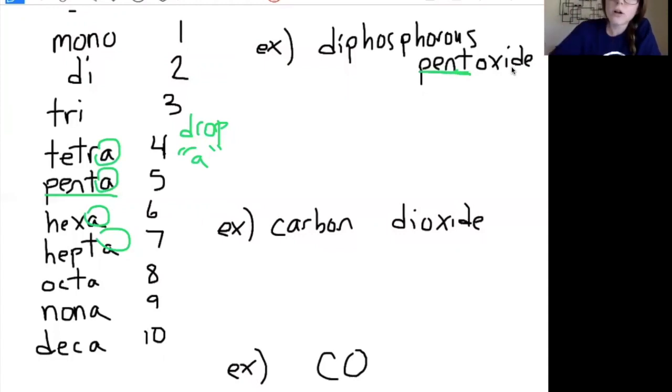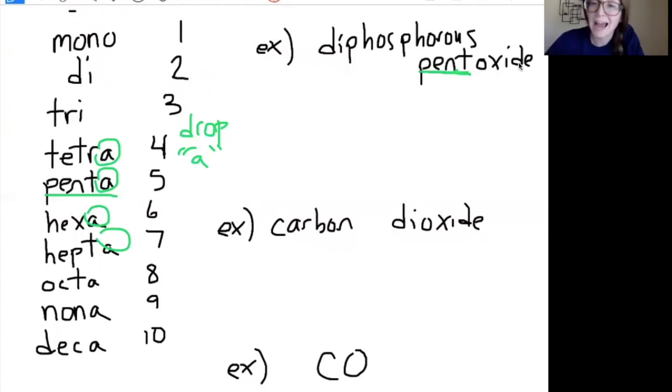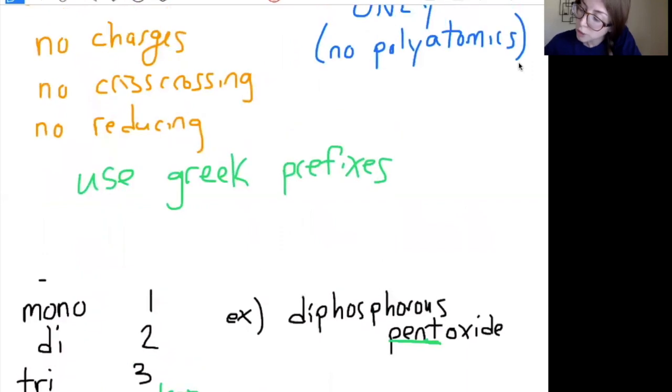Right off the bat, we know it's a covalent compound because I see di and pent. Those are prefixes. Also, if I look on my periodic table, phosphorus and oxygen are on the right side of the staircase. Covalent compound, don't look at their charges, I don't care. Since it's a covalent compound, the prefixes tell me how many atoms.